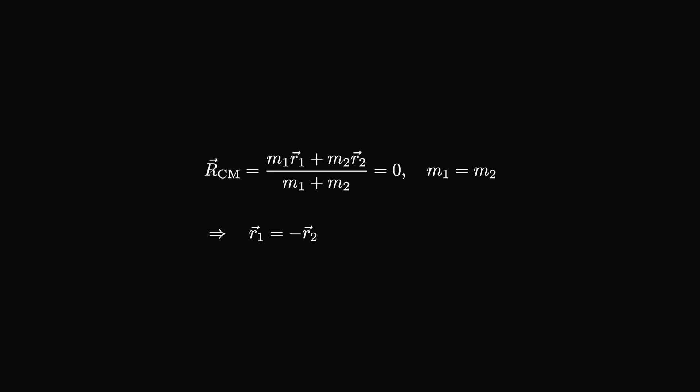In the center of mass frame, where the center of mass of the system is taken to be the origin, the point mass and the center of the ring are equidistant from the origin at all times.